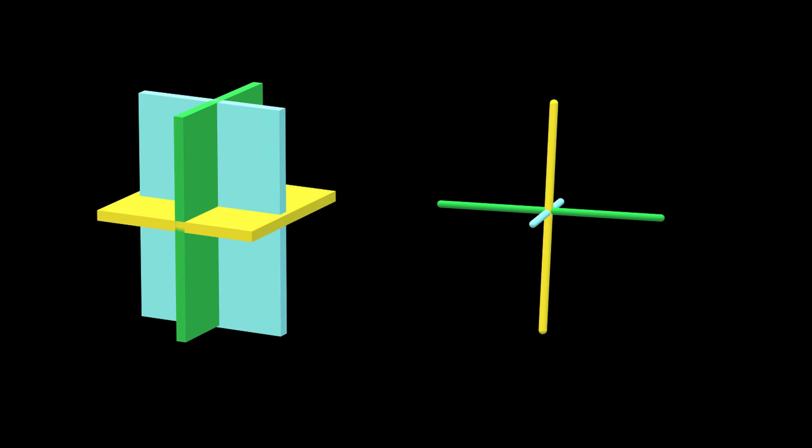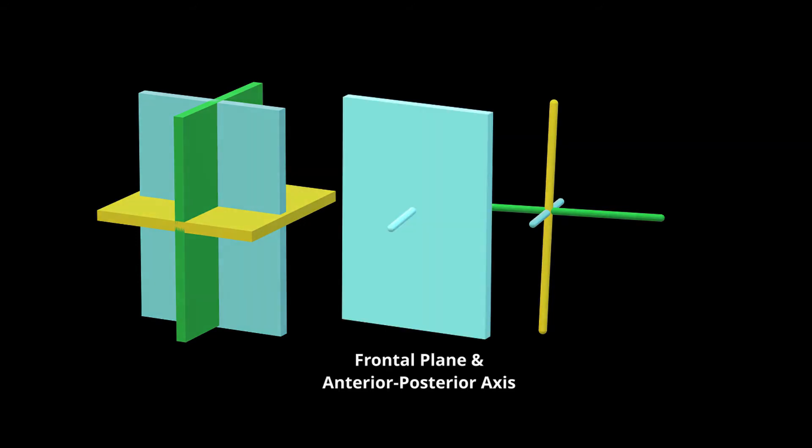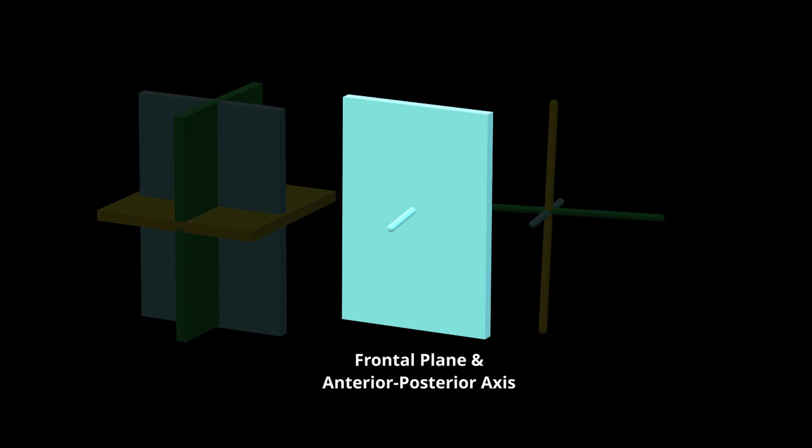Our axes and our planes are connected. If you'll notice, we have color coding for each pair. Blue here represents our frontal plane and the anterior-posterior axis. Our planes and axes are always aligned at 90 degrees to each other.